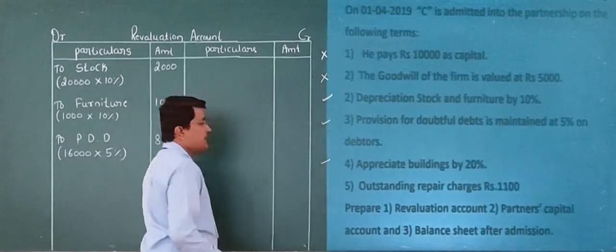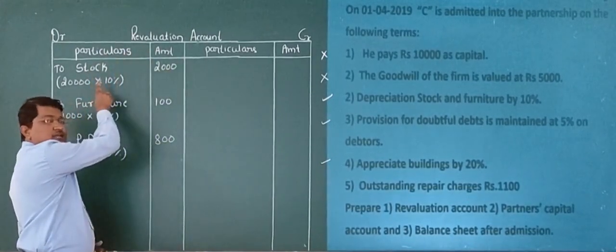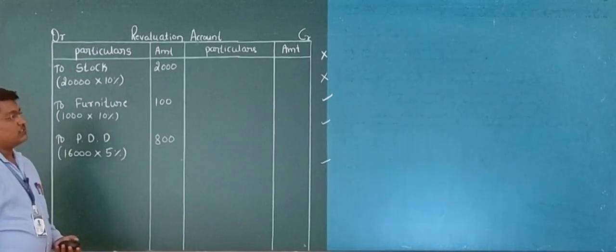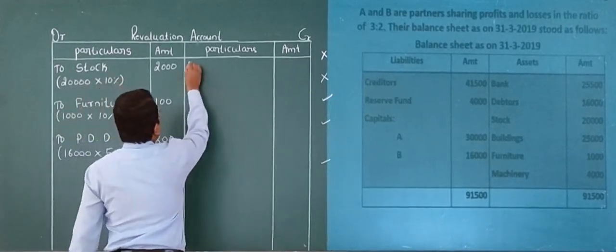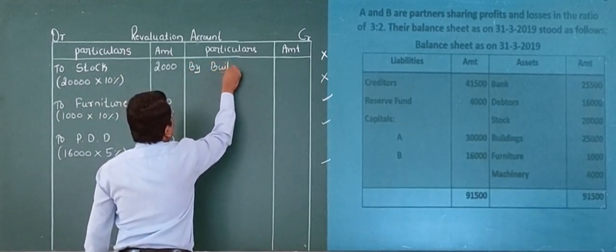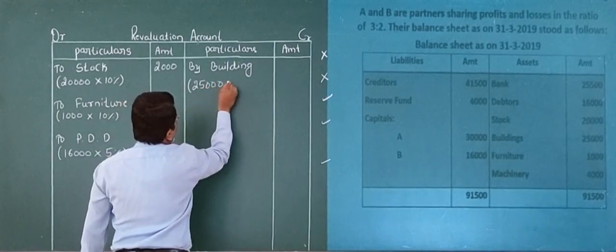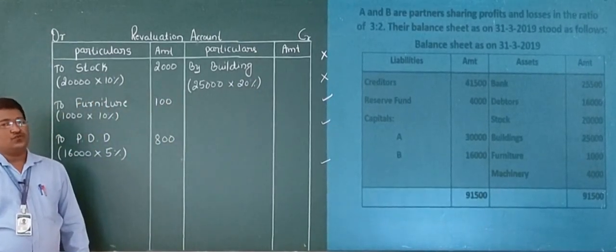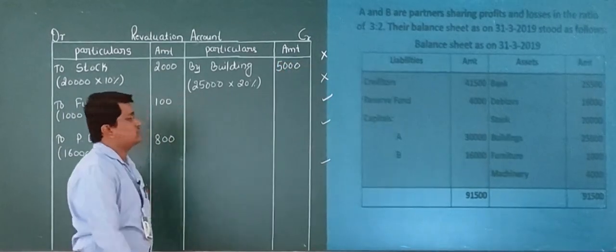We go for the next adjustment — depreciate building by 20%. Appreciation of an asset means it increases the asset, so it is recorded at the credit side. Building amount is 25,000. So 25,000 into 20% comes to 5,000.